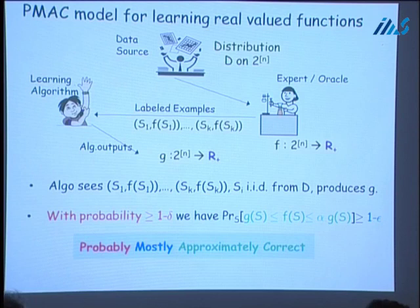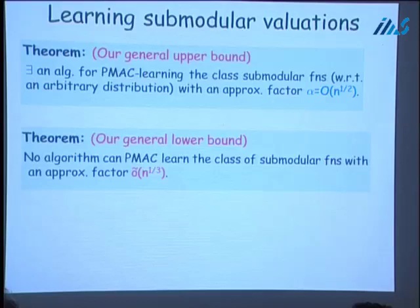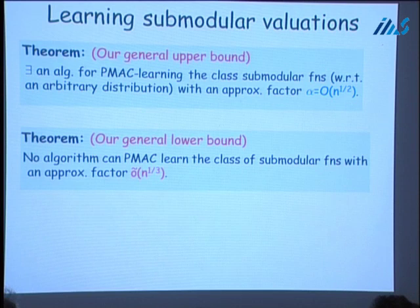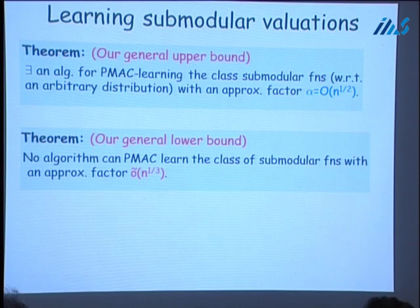The main question is: what approximation factors can you get by using only a polynomial number of examples? Our main results for learning submodular functions are as follows. First, we show a general upper bound: there exists a polynomial-time algorithm for PMAC learning the class of non-negative monotone submodular functions with an approximation factor of square root of N. We also show a surprisingly lower bound: any algorithm using only a polynomial number of examples cannot PMAC learn submodular functions with an approximation factor better than N to the one-third.